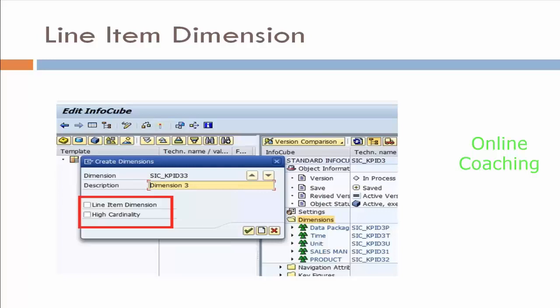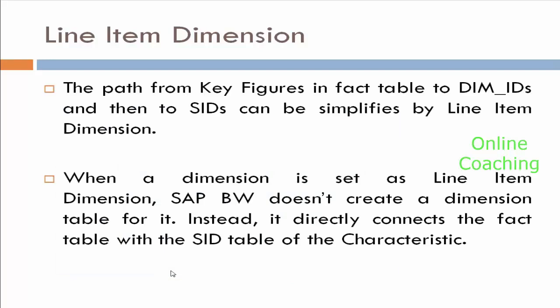We have a line item dimension. Whenever I am creating a dimension, it is going to ask you two options: do you want to make this line item, or do you want to make this high cardinality? There are two checkboxes. So what is a line item dimension? The path from the key figures in the fact tables to dimension ID, then SID, can be simplified by the line item dimension.